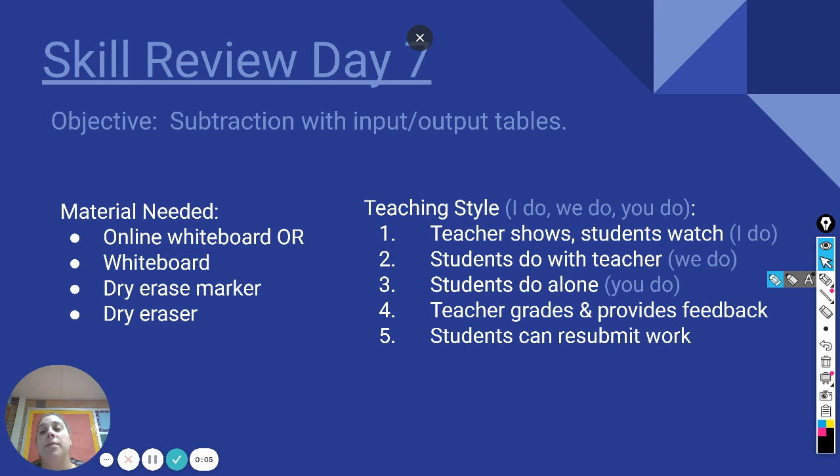Today we're doing skill review day seven. The objective is subtraction with input output tables. The materials needed for today are your online whiteboard or your whiteboard, dry erase marker and dry eraser. The teaching style we're going to follow is where I do it, we do it together, and then you do it on your own.